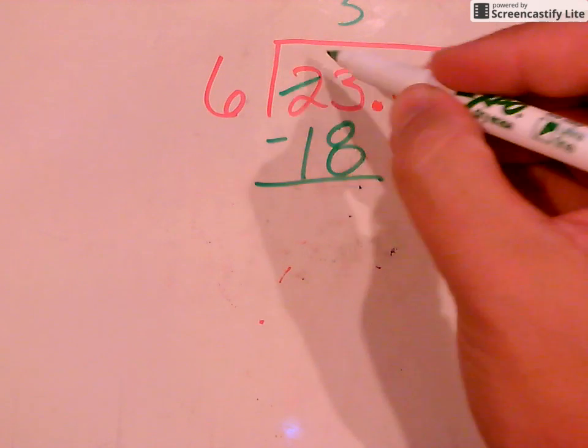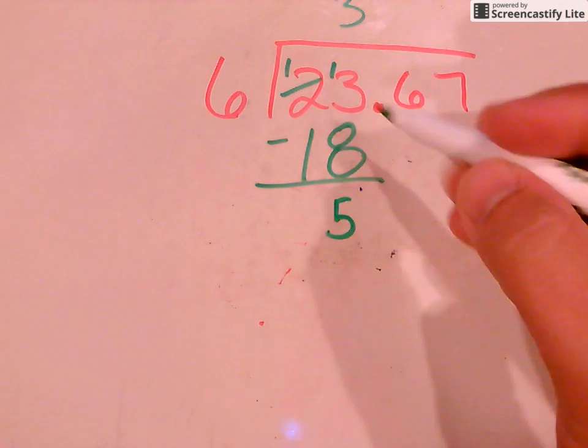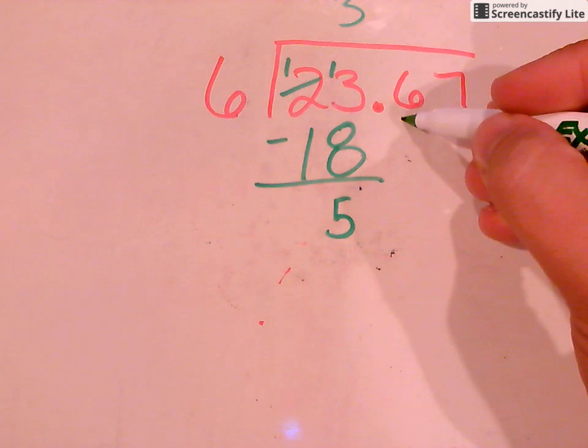And if I do my subtraction, I got to borrow from there. 13 minus 8 is 5. 1 minus 1 is 0. Let's go ahead and bring down our 6.